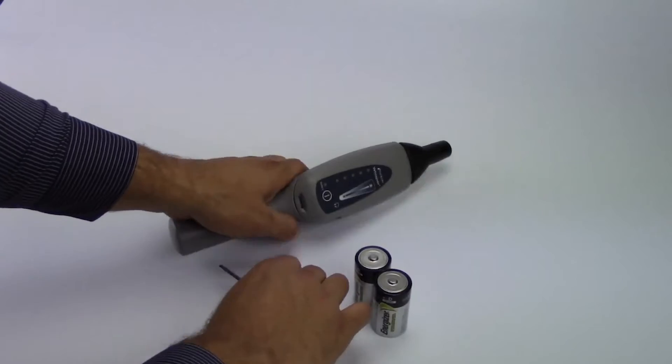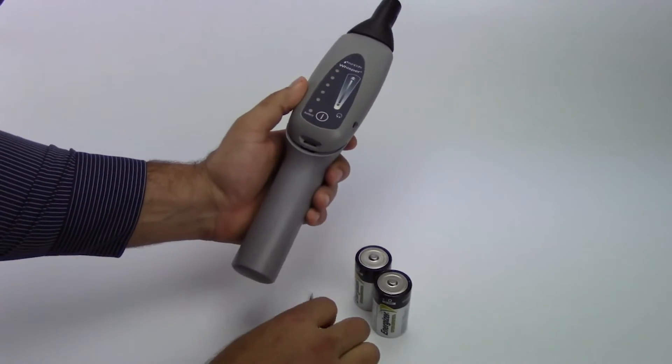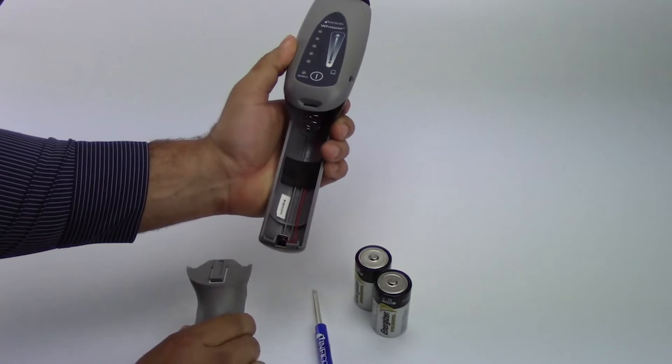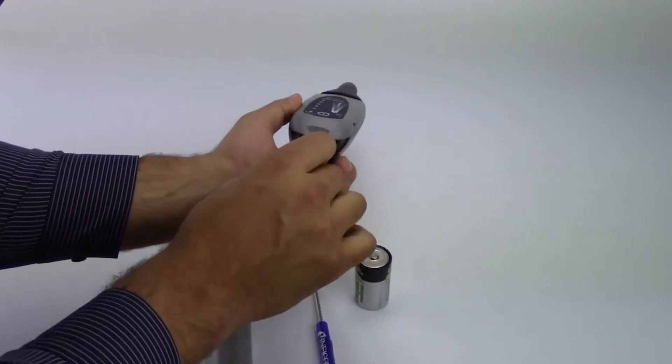To install the batteries, first press the tab on the battery cover and remove the cover. Install the two D-cell batteries and replace the cover.